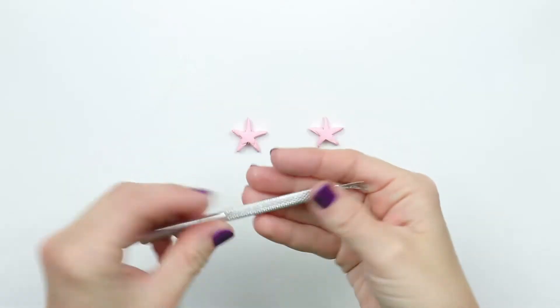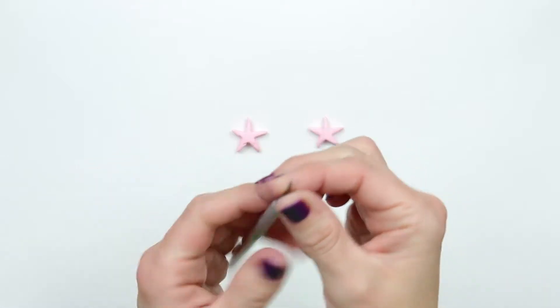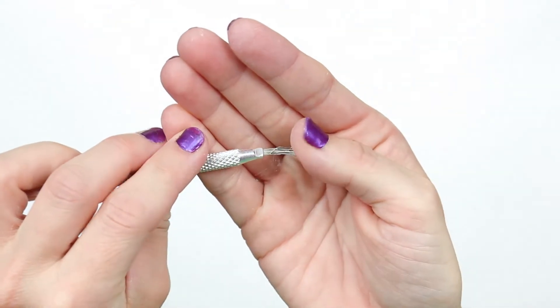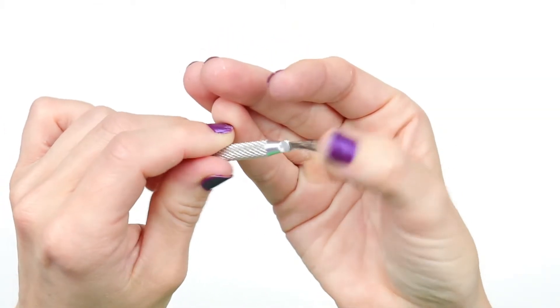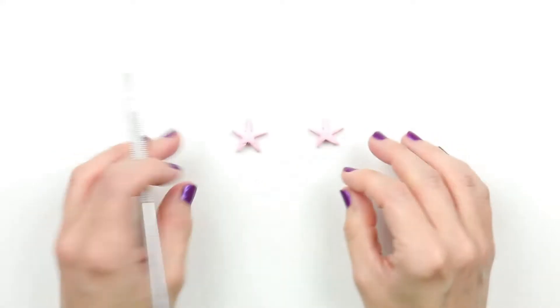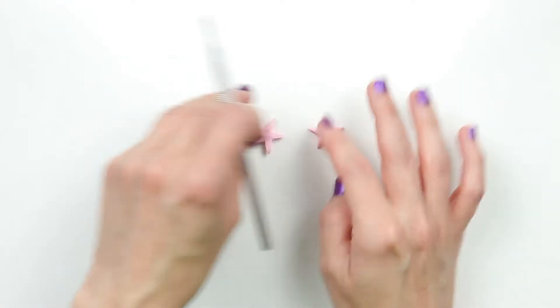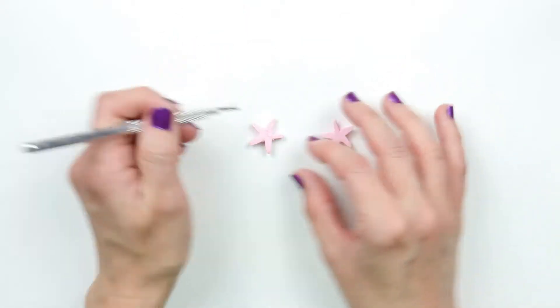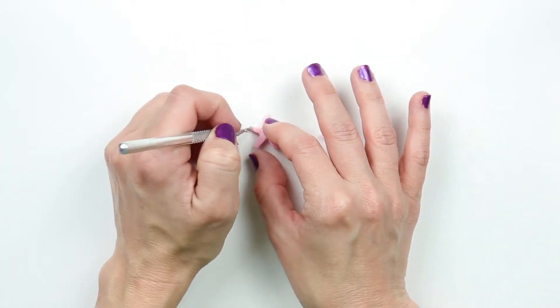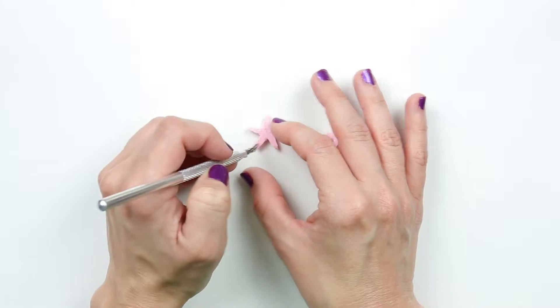I will be using this clay tool to make texture on the starfish. You could also use a clay brush or a toothbrush to get the same effect. Be sure to texture the front and back of the starfish.